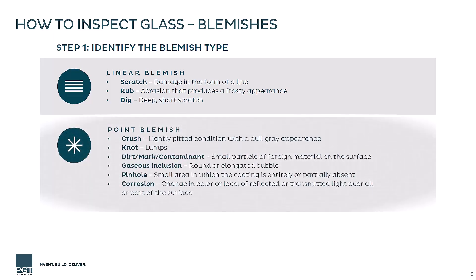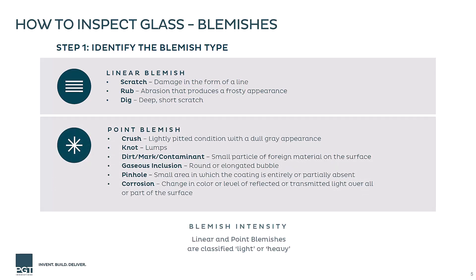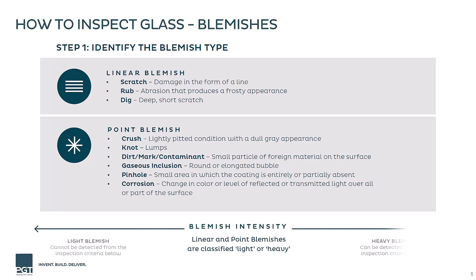Point blemishes can occur from dirt, debris, fuzz, air bubbles, and other abrasions forming a small nonlinear imperfection. These blemishes are then differentiated as being light or heavy. A light blemish is not detectable when using the appropriate viewing distances, whereas a heavy blemish will be visible.